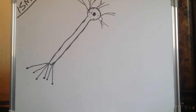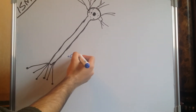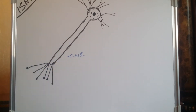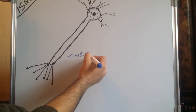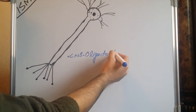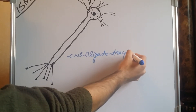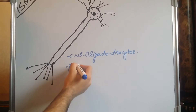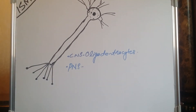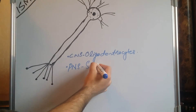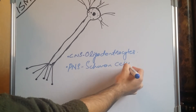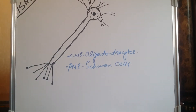Myelination is provided by different types of glial cells. In the central nervous system, myelination is provided by oligodendrocytes, and in the peripheral nervous system, myelination is mainly provided by Schwann cells. We will discuss the difference between the myelination provided by oligodendrocytes and Schwann cells in detail.